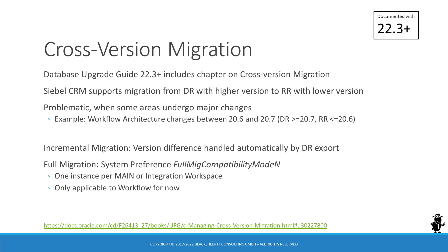In a nutshell, Siebel CRM supports migration from DR to RR environments, even if the DR is on a higher version than the RR. For example, the development team might be working on a 21.12 environment while production is still on 21.4. There is, at the time of this recording, only a single use case where it's quite problematic to have differing DR and RR versions: that is, the DR version is above or equal to 20.7 and the RR is on 20.6 or earlier.